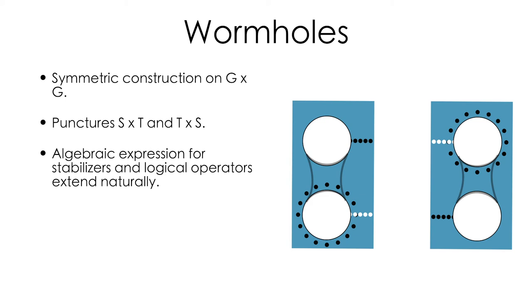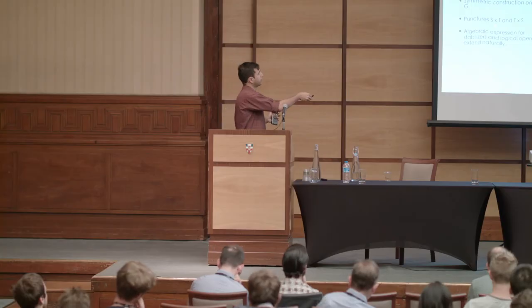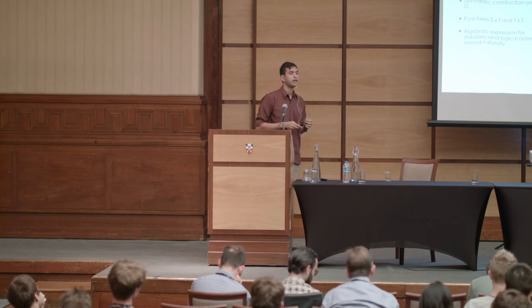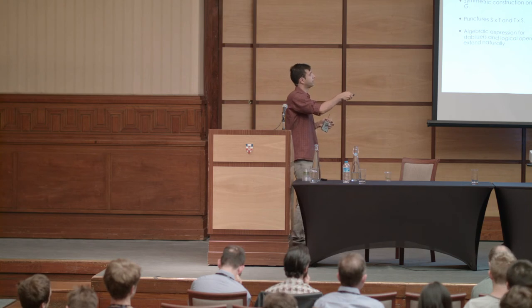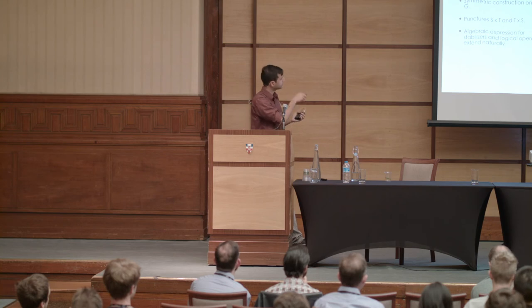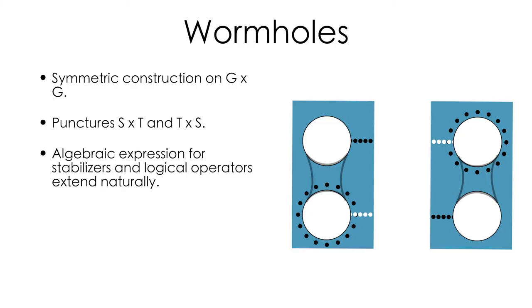That's how you create a wormhole on a surface code. To generalize this to hypergraph product codes, we define what we call a symmetric construction of a wormhole. You consider two products of one graph G, so every element has a corresponding element in the other graph by definition. I defined smooth and rough punctures using some subsets S and T, and I use the same types of objects to create both puncture types on these graphs. Then I perform entangling measurements between partners in either graph, yielding a fairly straightforward procedure to create hybrid operators. Following this recipe, there exists an algebraic expression for the stabilizers of your wormholes as well as the logical operators corresponding to a wormhole.